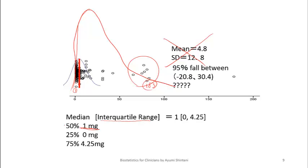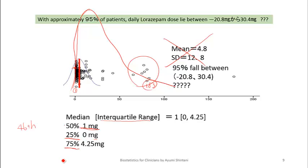What is interquartile range? Interquartile range is the range from the 25th percentile value to the 75th percentile value. What is the 25th percentile of 183 patients? That's one quarter, so about the 46th person, whose value is still 0 mg. The 75th percentile person is the 137th person, whose value was 4.25 mg. So the median is 1, and the interquartile range in this data is 0 to 4.25 mg.